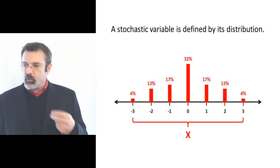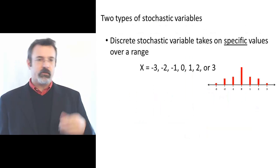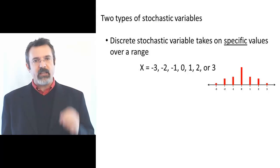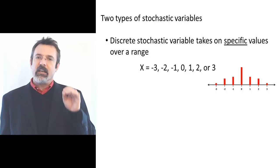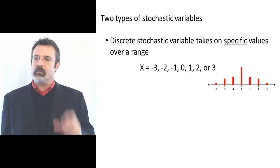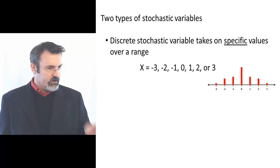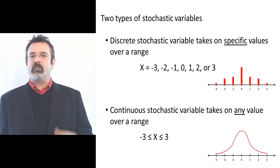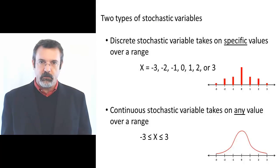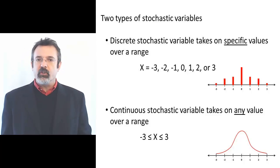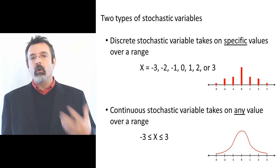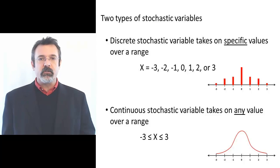There are two types of stochastic variables: discrete and continuous. Discrete stochastic variables take on specific values — negative 3, negative 2, negative 1, 0, 1, 2, and 3. A continuous stochastic variable can take on any value over a range, for example all the real numbers between negative 3 and positive 3.